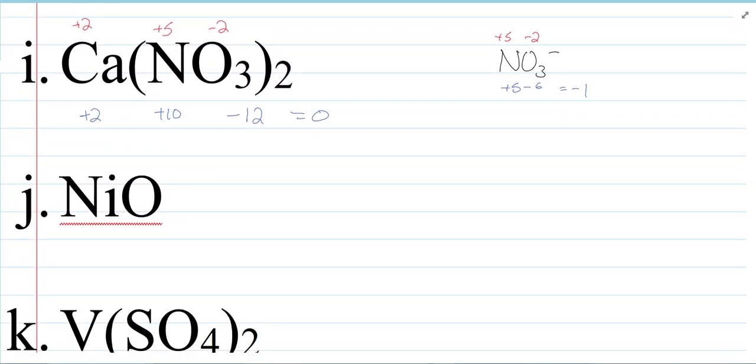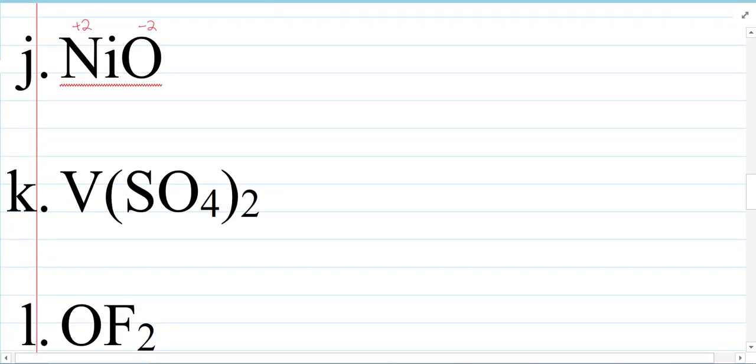So you can do it either way. If you need to pull the polyatomic ion out to do it, feel free to do so. How would you name J? I would name J nickel two oxide, wouldn't you? Plus two, minus two. Works out great. What about K? How would you name K? I would name it vanadium oxide. Well, I know sulfate. Remember, sulfate is SO4 two minus. And I have two two minuses. So vanadium should be plus four. Vanadium four sulfate.